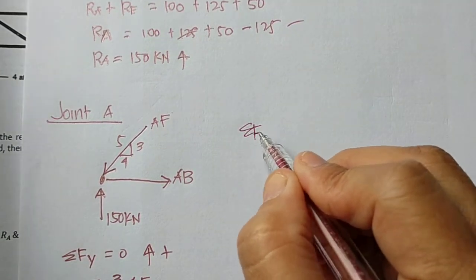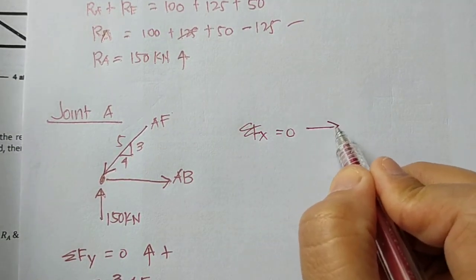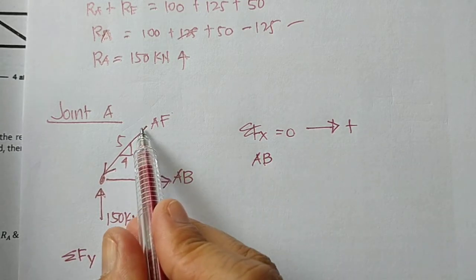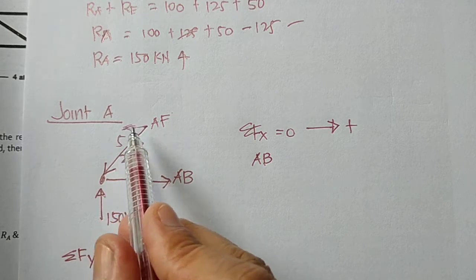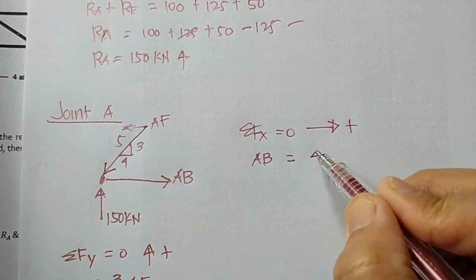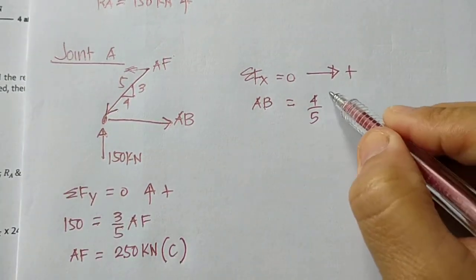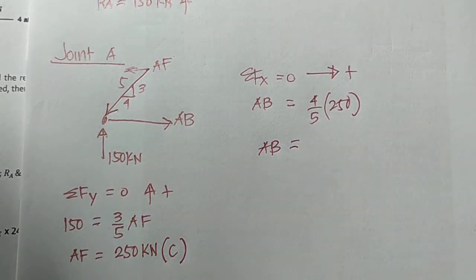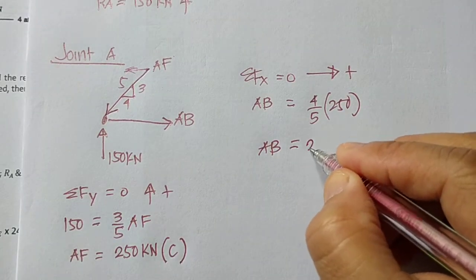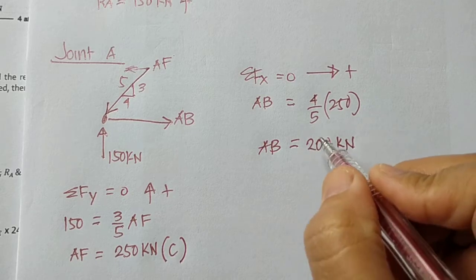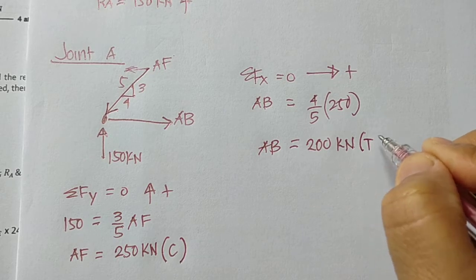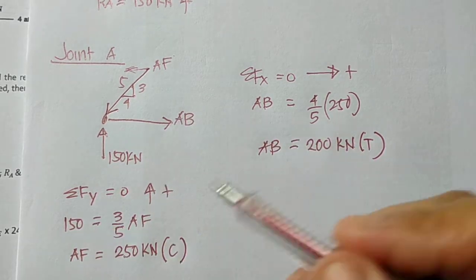Summing forces along the x-axis equals zero, going right positive: AB is counteracted by the horizontal component of AF. AB = (4/5) × 250 = 200 kilonewtons. Since I get a positive result, my assumption is correct — AB is tension.